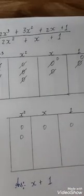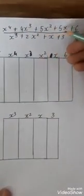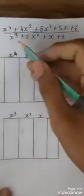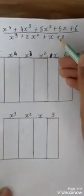So now second. The question is x⁴ + 4x³ + 5x² + 5x + 6 divided by x² + 2x + 3.